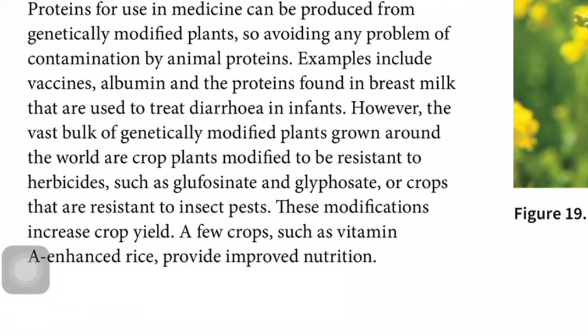Genetic engineering in plants is used to increase the yield of crops. Herbicides are chemicals used to kill weeds, not the crops, but some herbicides also damage the crops, decreasing yield. If the crops can be genetically modified to be resistant to that herbicide, the crop won't be damaged and yield won't be decreased. Similarly, insect pests feed on crops, reducing yield, so crops can be genetically modified to be resistant to those pests.